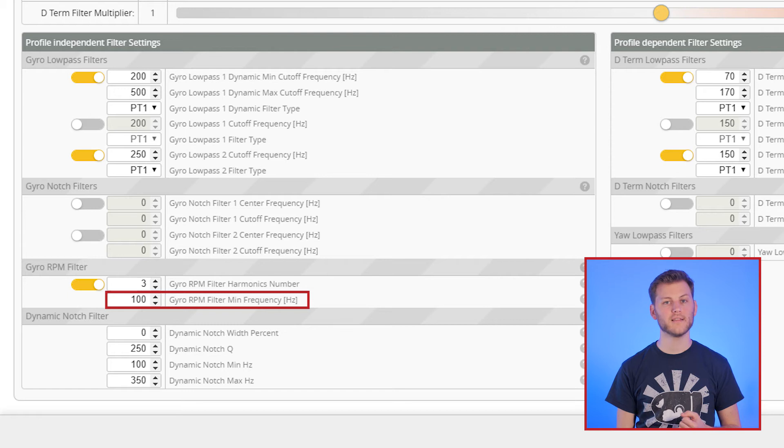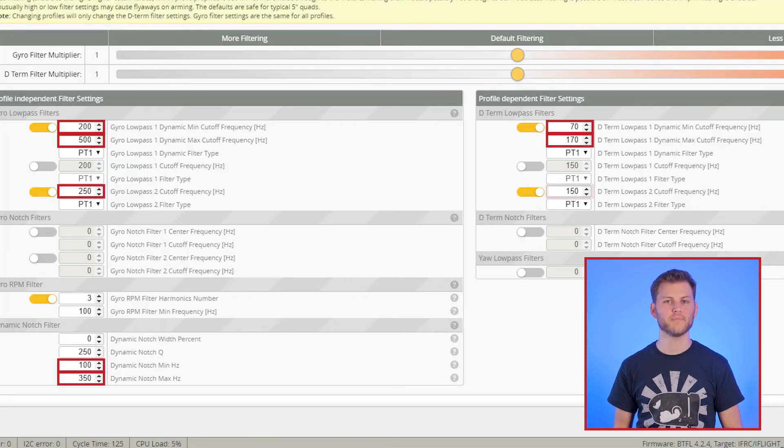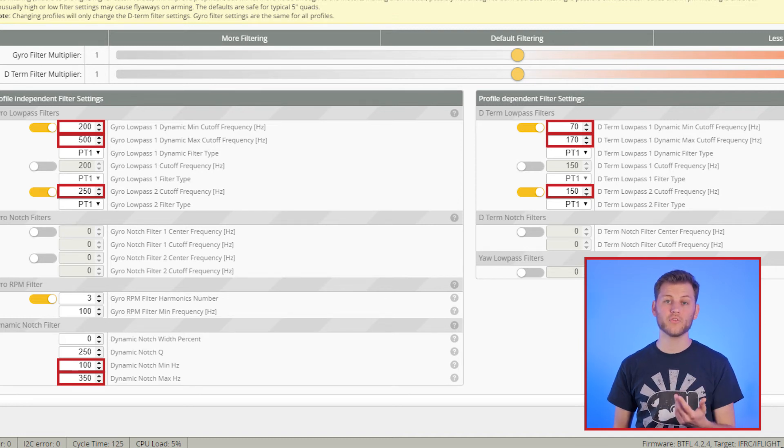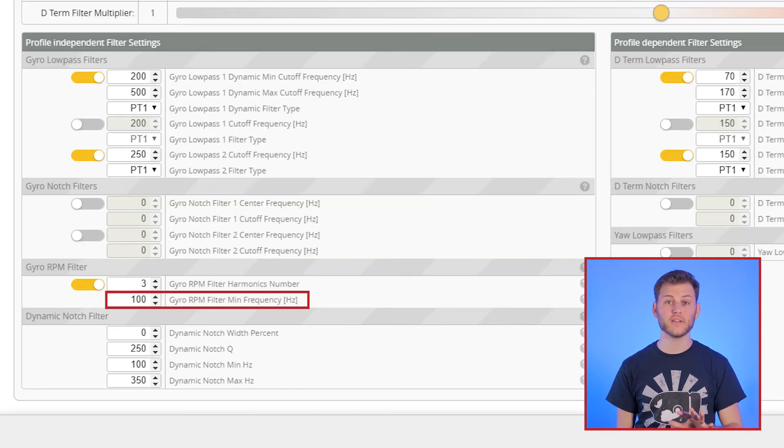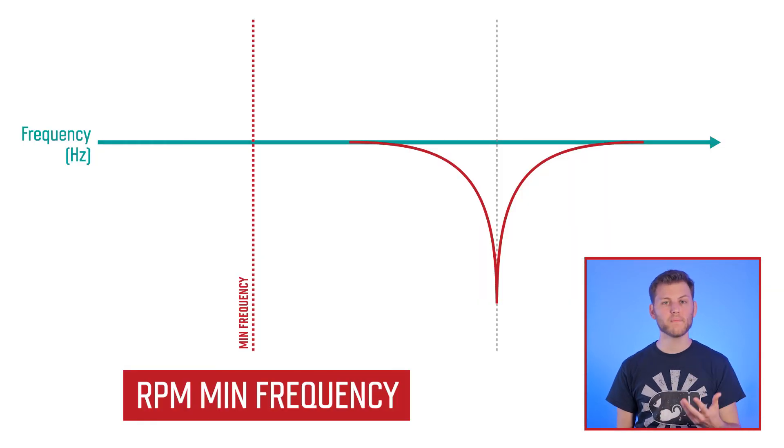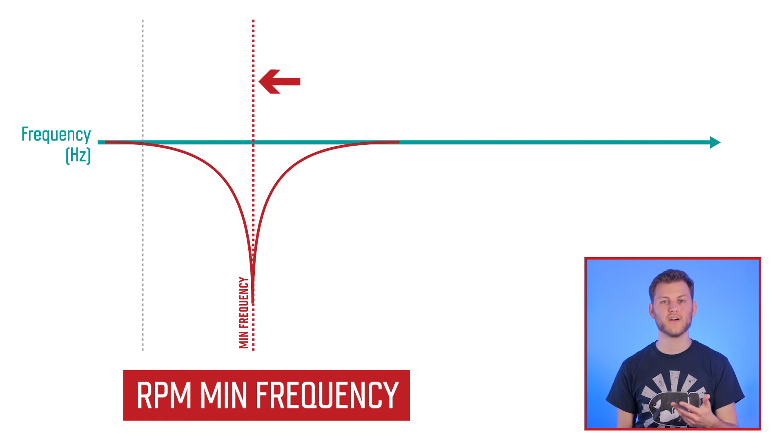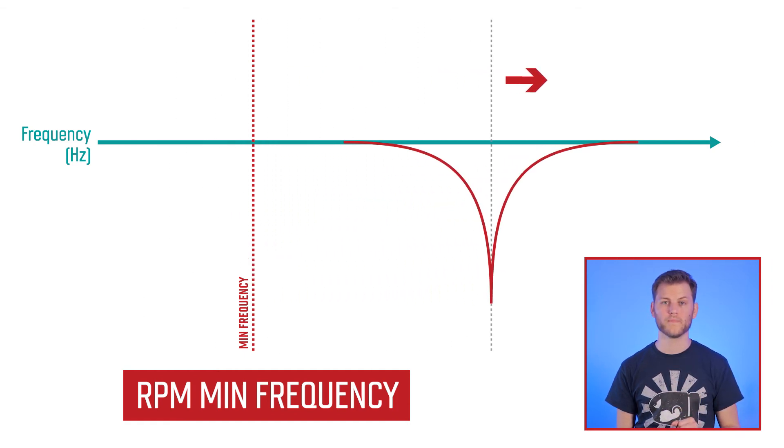The other setting on this section is the minimum frequency. Any other setting in Hertz on the filter page will allow you to change the amount of filtering and reduce your phase delay if you increase the frequency. But this one is totally different. It will prevent the RPM filters to go lower than that value which would be way too low. It actually doesn't matter because when you fly, you will always be above that frequency. So just leave that to default.